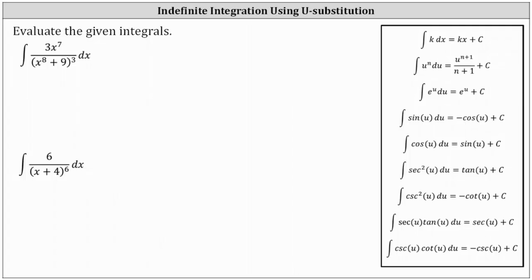First, we have the integral of three x to the seventh divided by the cube of the quantity x to the eighth plus nine dx. When performing u-substitution, we always want to be analyzing the integrand function and recognizing if we set part of the integrand equal to u, would differential u match the remaining part. Often, when we have part of the integrand raised to a power, we let u equal the base.